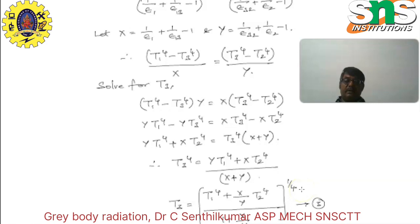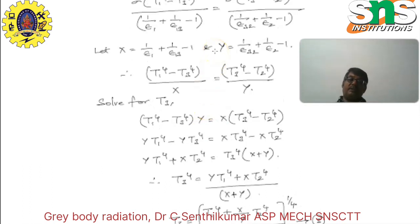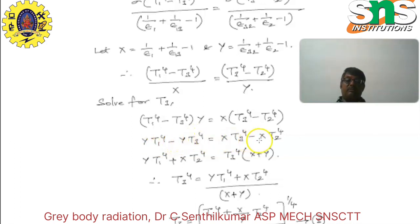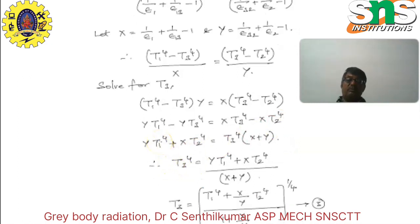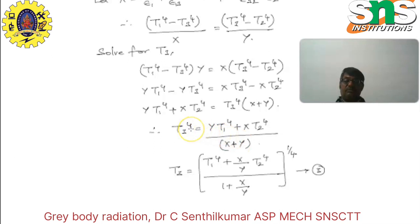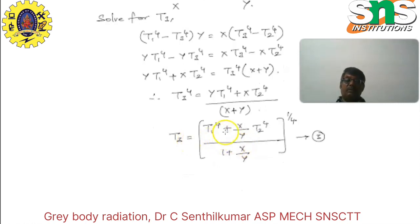Solving the equation: Y(T1⁴ − T3⁴) equals X(T3⁴ − T2⁴), which gives Y·T1⁴ + X·T2⁴ equals T3⁴(X + Y). Therefore T3⁴ equals (Y·T1⁴ + X·T2⁴)/(X + Y), and T3 equals [(T1⁴ + (X/Y)·T2⁴) / (1 + X/Y)]^(1/4). Let this be equation number 3.